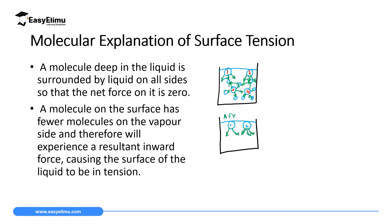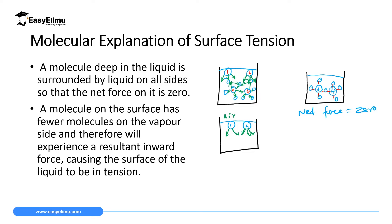For molecules three and four inside the liquid, there is a mutual force from all sides — they are attracted by a force from all sides. This means the net force on molecules three and four is zero. They don't experience a greater force from one side; they receive equal force from all sides because they are surrounded by molecules of the same kind from all directions.